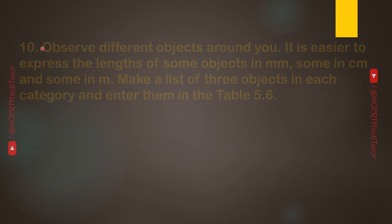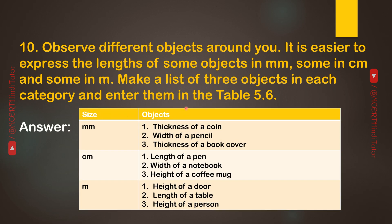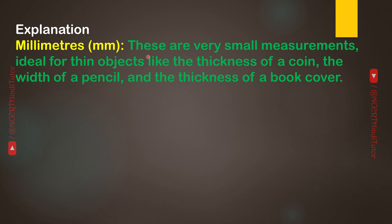Question 10: Observe different objects around you. It is easier to express the length of some objects in millimeters, some in centimeters, and some in meters. Make a list of three objects in each category. Answer — Millimeter: thickness of a coin, width of a pencil, thickness of a book cover. Centimeter: length of a pen, width of a notebook, height of a coffee mug. Meter: height of a door, length of a table, height of a person.